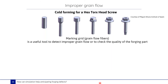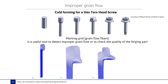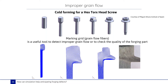Here, a forming sequence of a hex torx head screw is presented with several stations. We will model the forming of the screw and see how the marking grid is useful to detect the improper grain flow, or to check the quality of the forging part. We see the grain flow during the whole forming sequence. Thanks to Forge, it is possible to follow the grain flow during the entire forming sequence. We can see the continuity in the grain flow, which gives very good mechanical properties. Comparing with the specification, we can see that our grain flow is similar to the required reference.